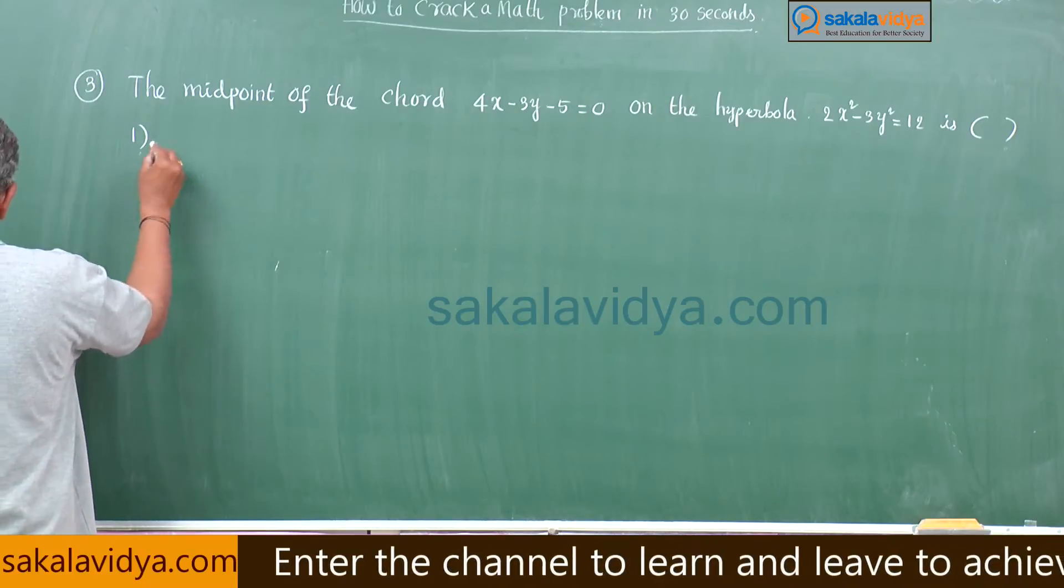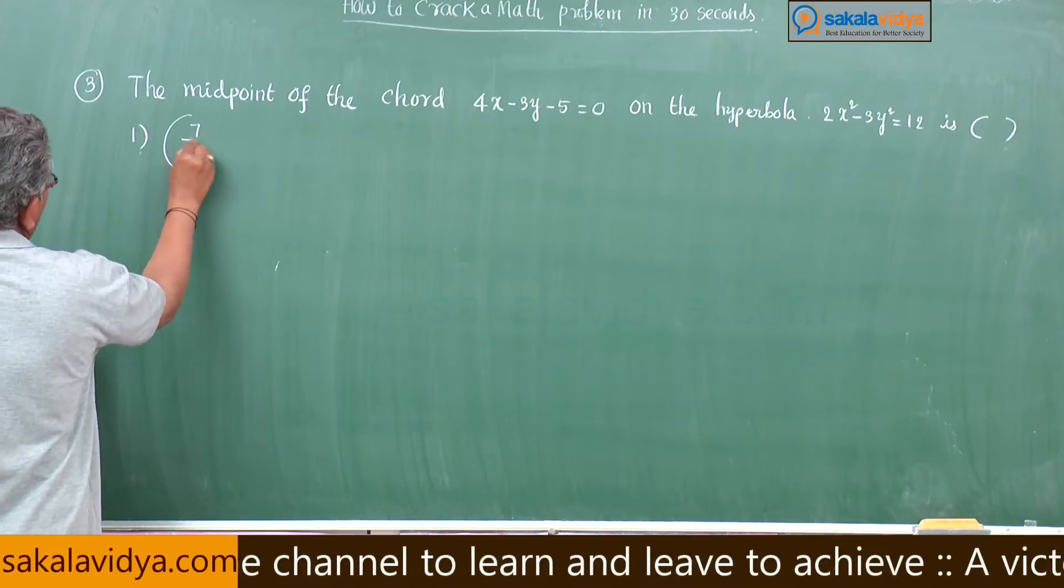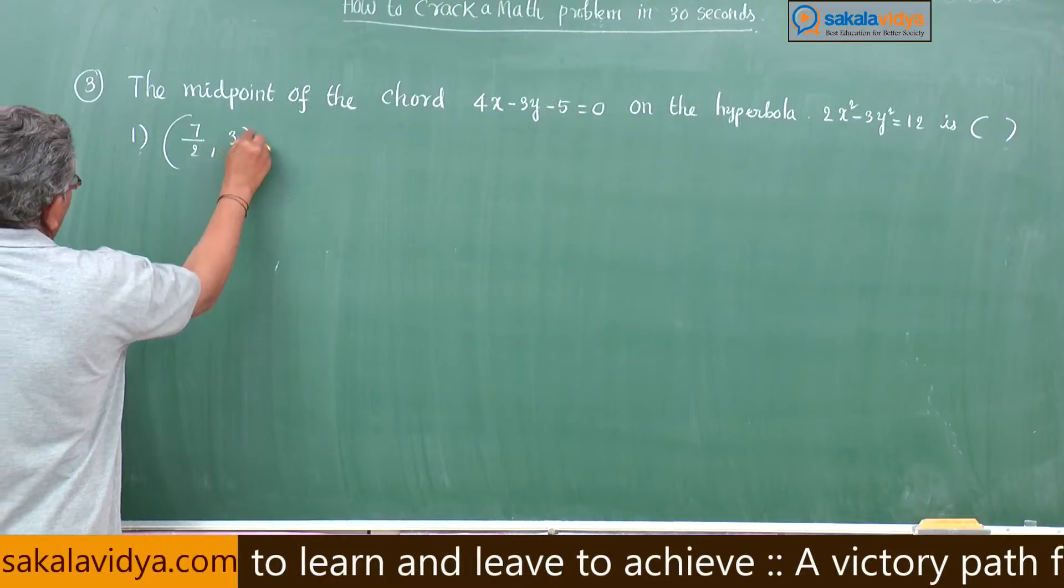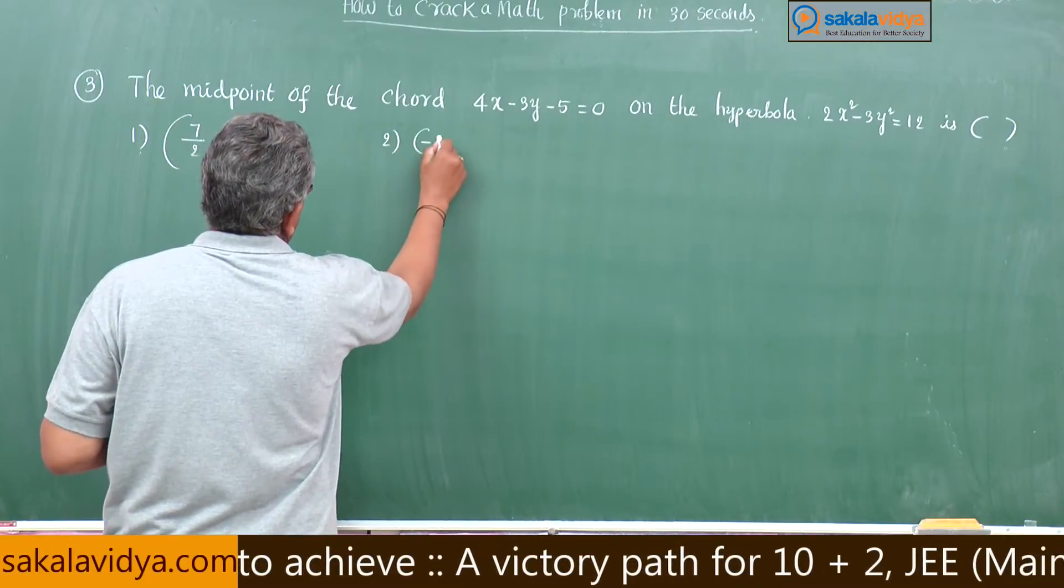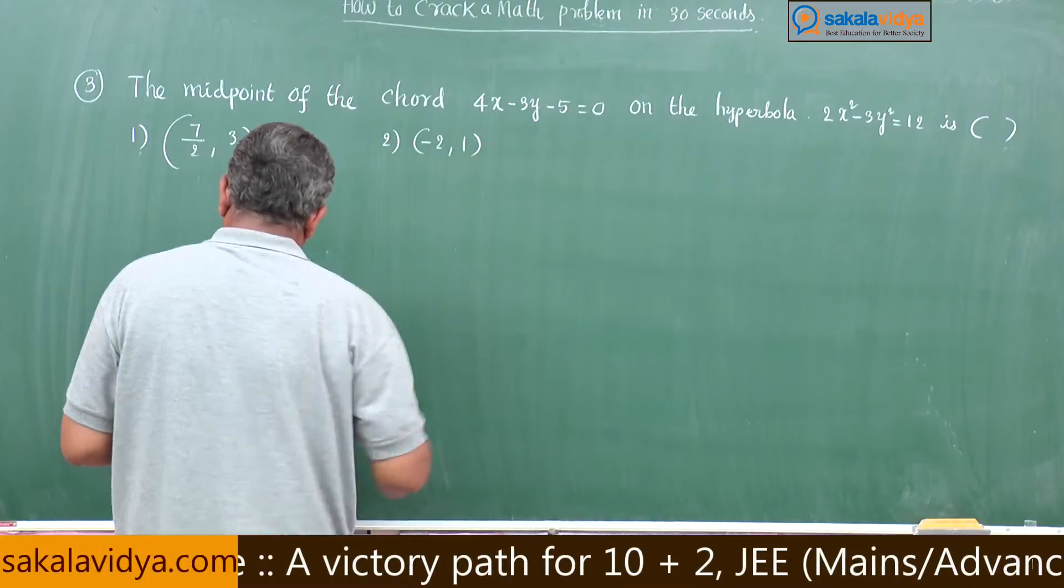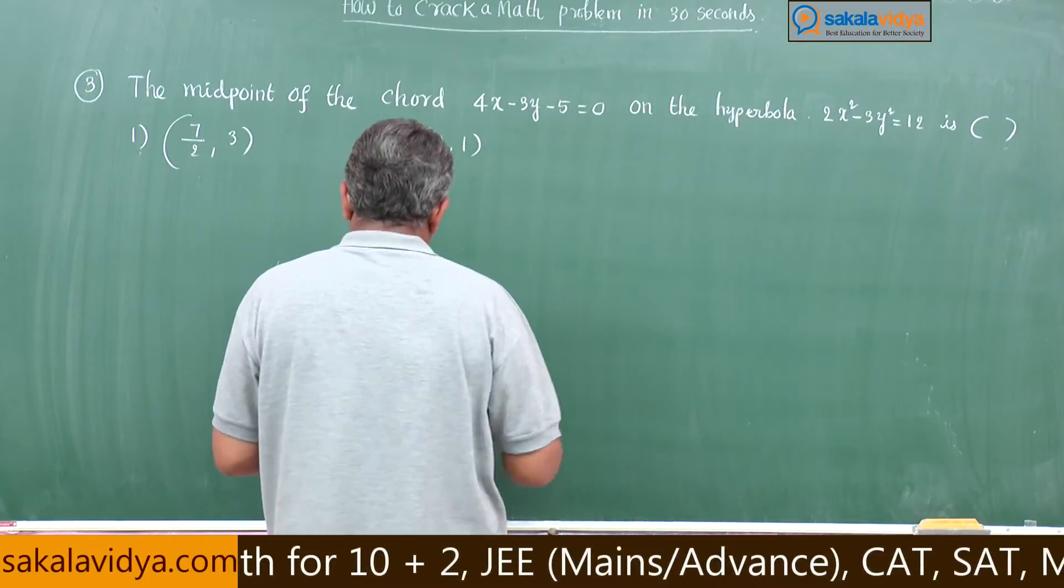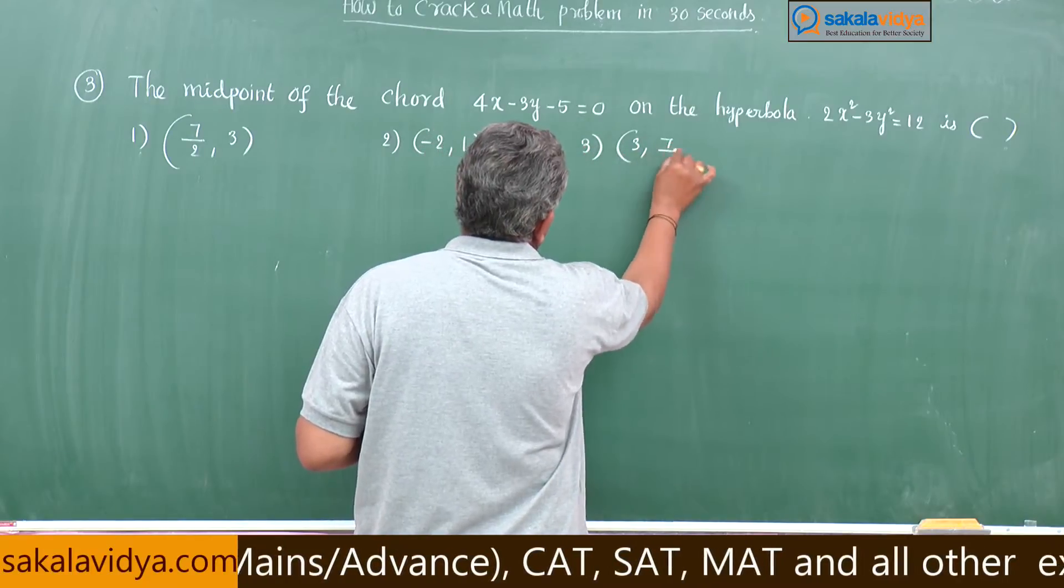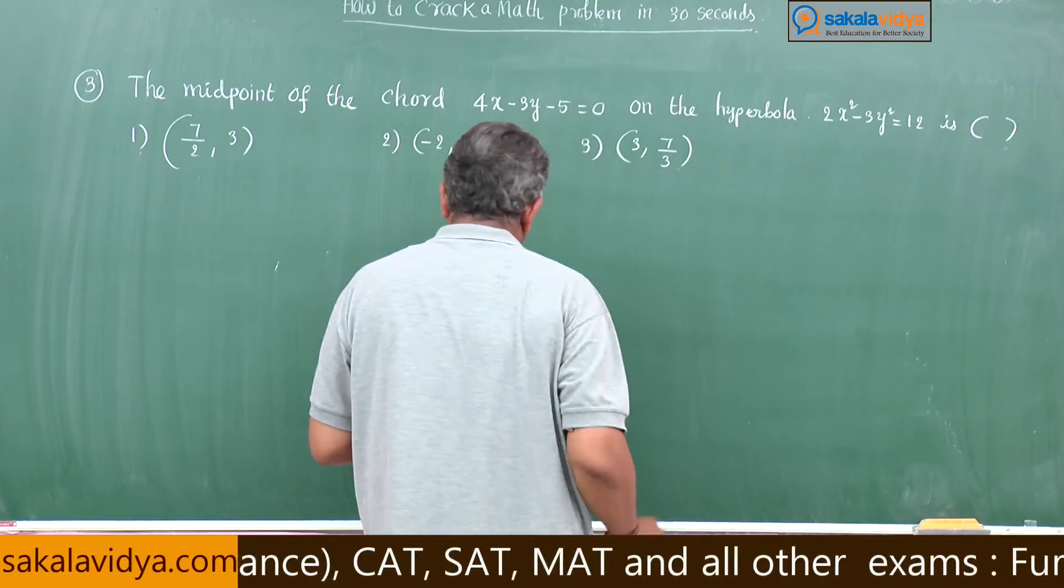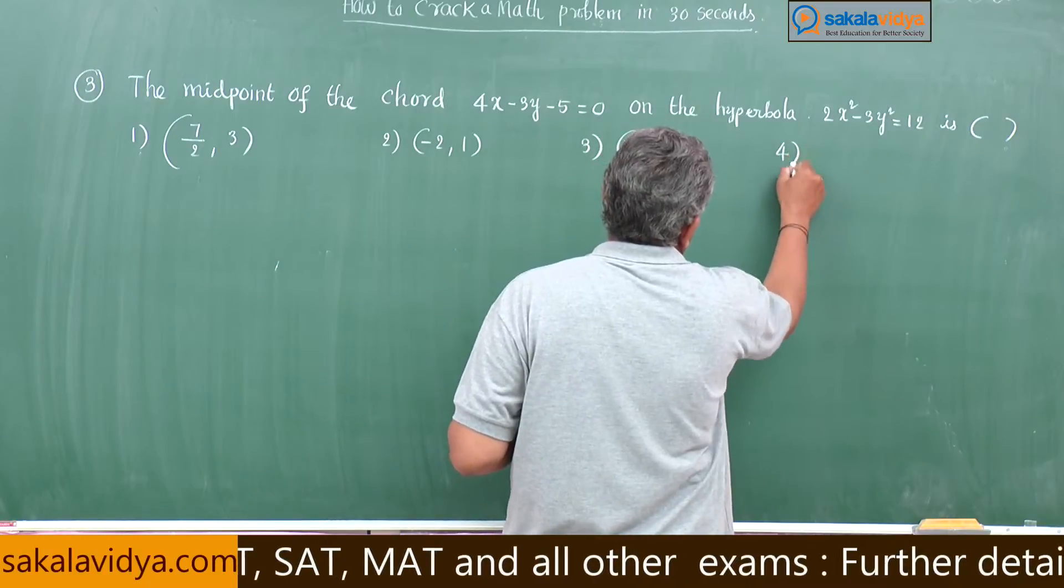First option: 7 by 2 comma 3. Second option: minus 2 comma 1. Third option: 3 comma 7 by 3. Fourth option: 2 comma 1.